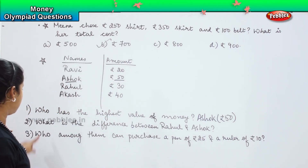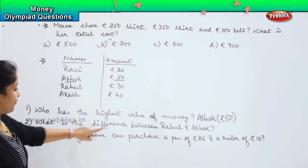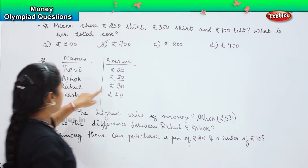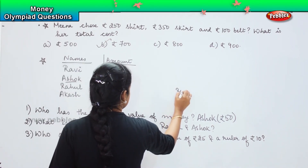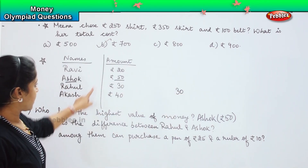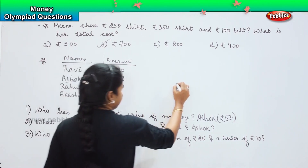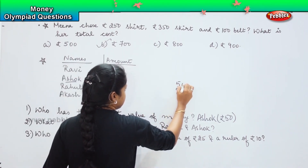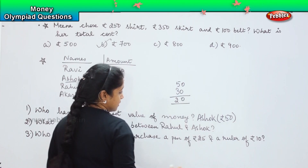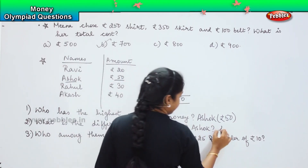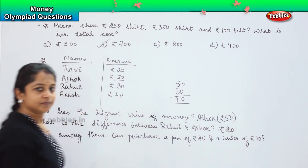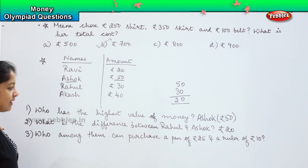The next one — what is the difference between Rahul and Ashok? Rahul has 30 and Ashok has 50. So it is a difference of 20 rupees.